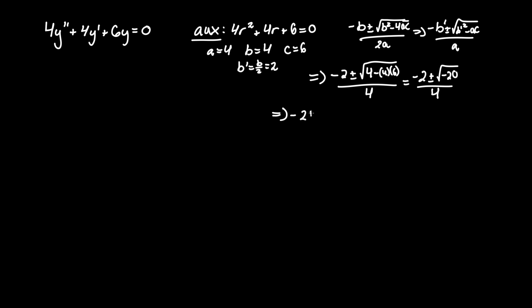Solving further, -2 ± 2i√5 / 4. And we can divide everything by 2, where it becomes -1 ± √5i / 2.